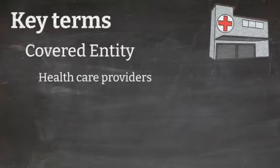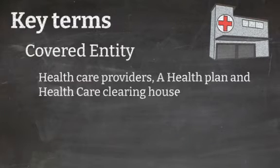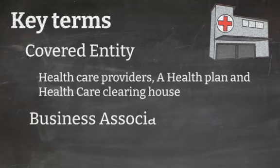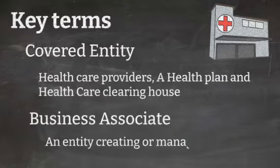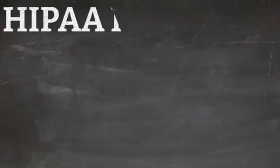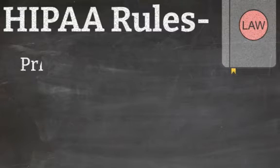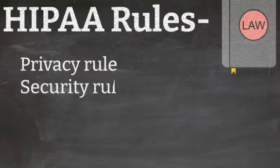Covered entities in HIPAA are health plans, health care clearinghouses, and health care providers who electronically transmit health care information. A business associate is a person or entity who uses or processes PHI on behalf of a covered entity.